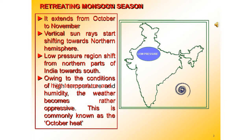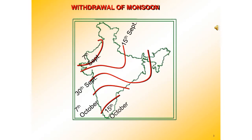This weather is commonly known as October heat. It starts in the second half of October and the mercury rapidly falls in northern India. The low pressure conditions over northwestern India get transferred to the Bay of Bengal by early November. This shift is generally associated with the occurrence of cyclonic depressions.